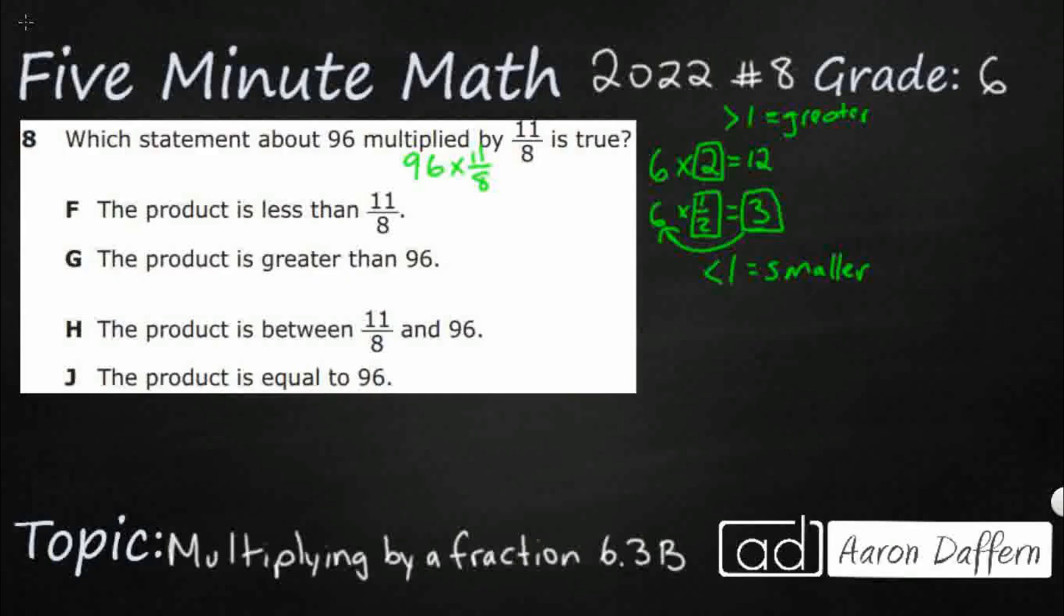In this case, I've got my 96 times 11-eighths. Multiplying it by 11-eighths, is this second factor greater than or less than 1? Well, 11-eighths is an improper fraction. Let's go ahead and make this into a mixed number. We're going to divide 8 into 11, and that's going to be 1 and 3-eighths. So definitely greater than 1. We also could have just told you that because it was an improper fraction. If the numerator is larger than the denominator, that means it's greater than 1 because 8-eighths is equal to 1. Anything greater than 8-eighths is going to be greater than 1.